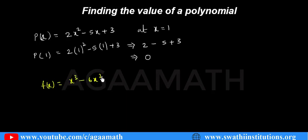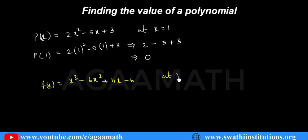So f of x equals x cubed minus 6x squared plus 11x minus 6. You have to find the value of this polynomial at x equals to 2.